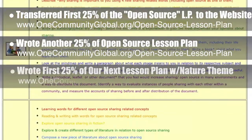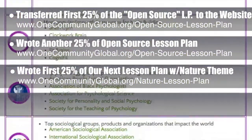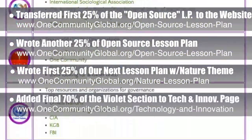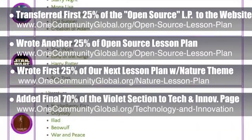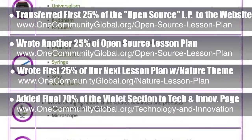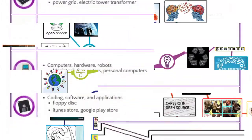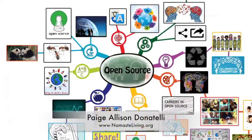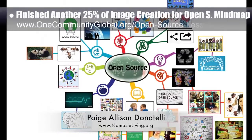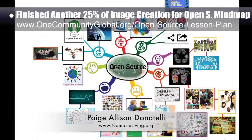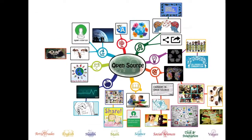Also behind the scenes, we wrote the first 25% of our next lesson plan with the central theme of nature. We also added the final 70% of the violet section to the Technology and Innovation Molecule webpage, which you can see here. This molecule is now 98% complete, with a few additional points to be researched and added. Paige Allison Donatelli, graphic designer and owner-operator of Namaste Living in a Material World, finished another 25% of the image creation for the open source lesson plan mind map, bringing this mind map to 50% complete.